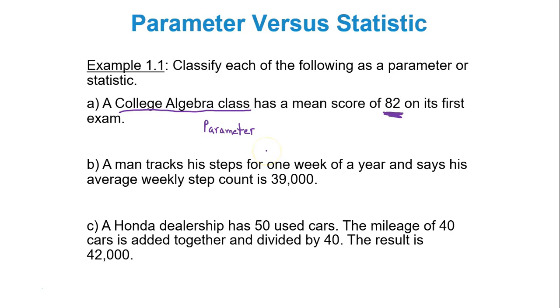In part B, a man tracks his steps for one week of a year and says his average weekly step count is 39,000. So we have this 39,000. How is this 39,000 calculated? This is the average weekly step count. Did we use all 52 weeks in the year? No, we only used one week. We used one week to create this 39,000 which we believe to be the average weekly step count. As a result, this 39,000 is a statistic. We only used one week of the 52 weeks in a year.